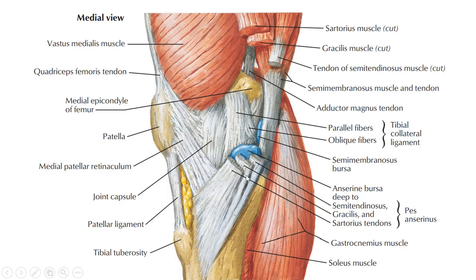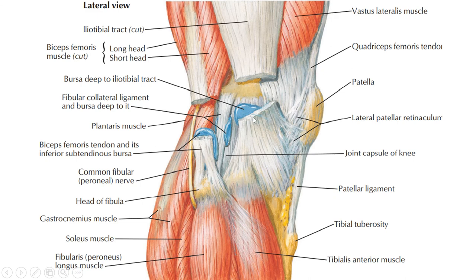Looking at the knee joint from the medial aspect: the medial collateral ligament is attached superiorly to the medial epicondyle and inferiorly to the tibia. Looking from the lateral aspect: the lateral collateral ligament is attached superiorly to the lateral epicondyle and inferiorly to the head of the fibula. This ligament divides the biceps femoris tendon into two parts — anterior and posterior — with the fibular ligament attached between them.